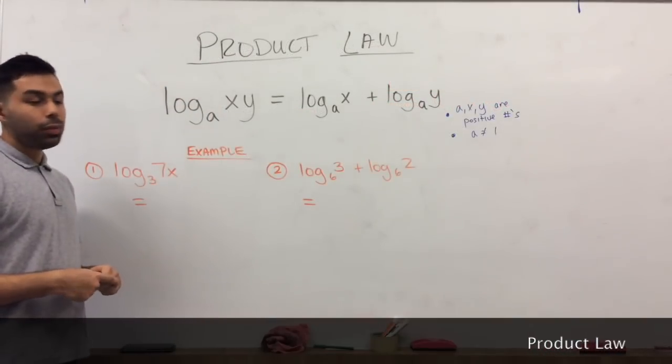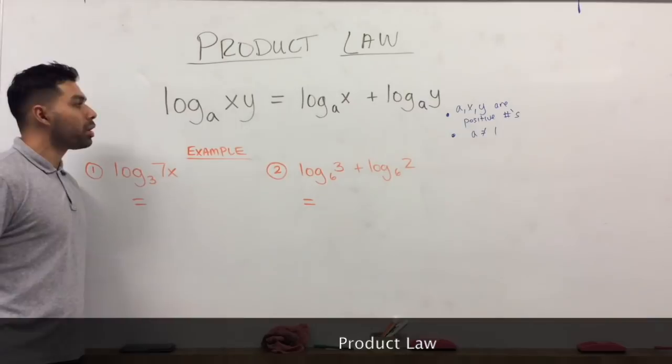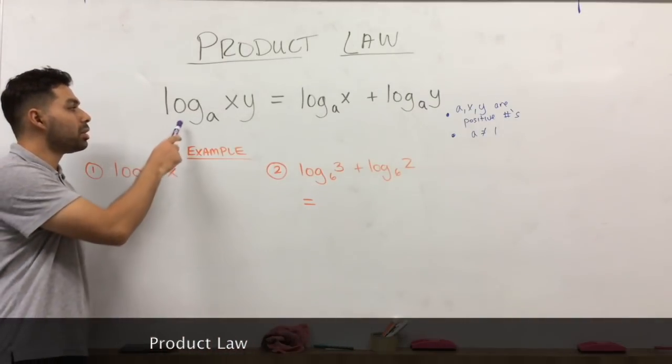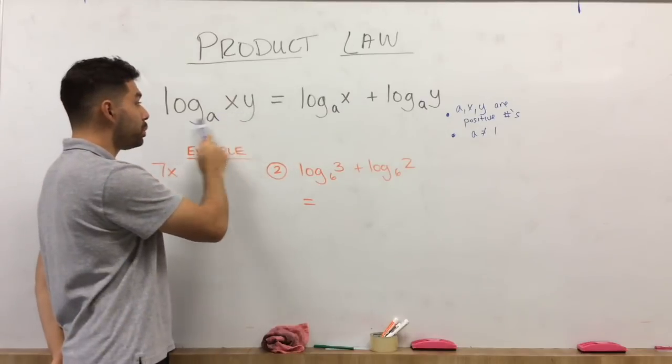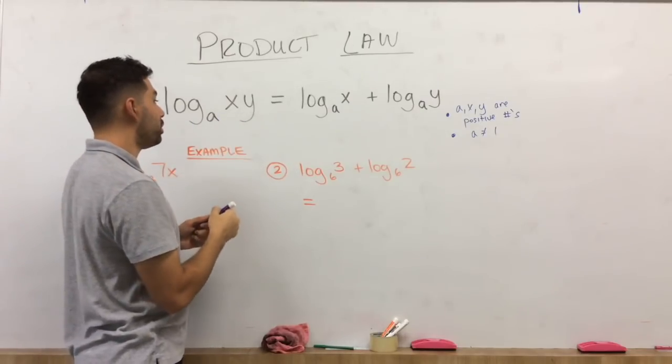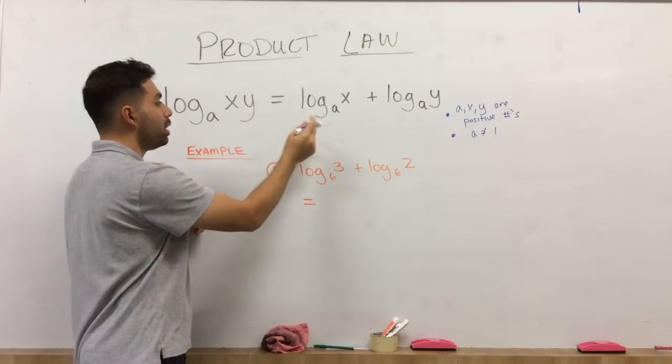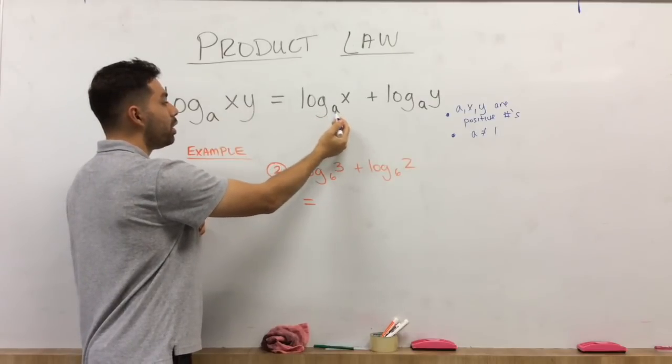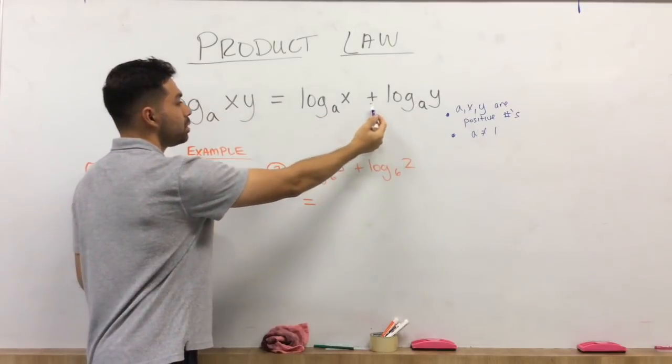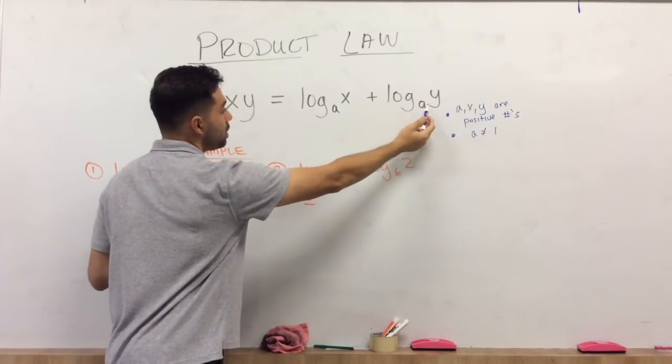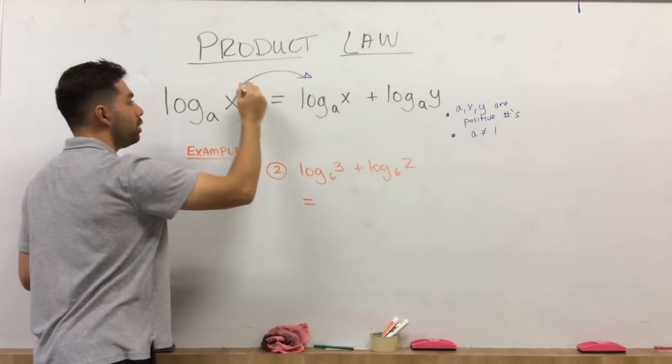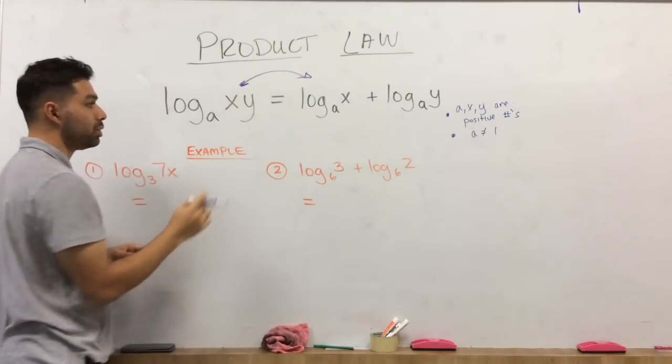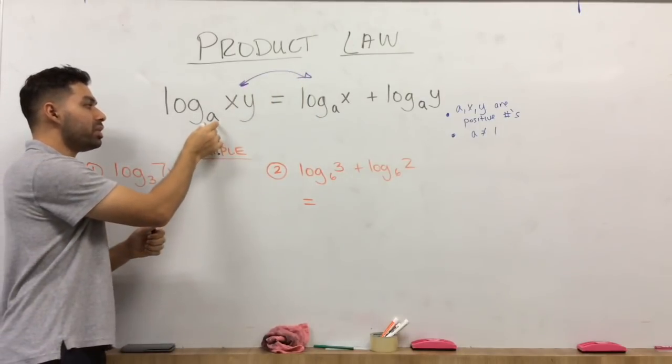All right, so the next thing we have is called the product law. What the product law tells you is log of base A, X times Y. And we can basically split this up, since these share the same base, into log of base A, X, plus log of base A, Y. So you should be able to go back and forth between these two, given the fact that you have the same base.